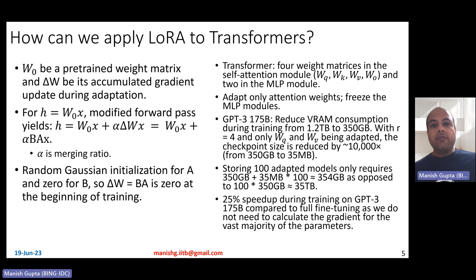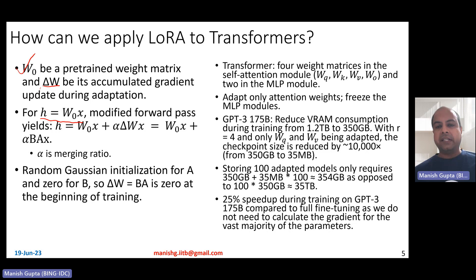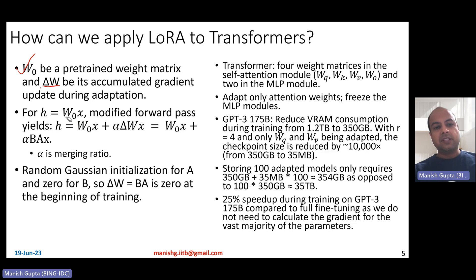How can we apply LoRA to transformers? Let W0 be the pre-trained matrix weights and delta W be the accumulated gradient update during adaptation. In general, a gradient update means you keep adding delta W to W0 to get revised weights. With just the pre-trained model, the hidden layer output is W0 times X. But with LoRA, the modified forward pass looks like: H equals W0X plus alpha times delta W times X, where delta W is managed by the two low-rank weight matrices A and B.